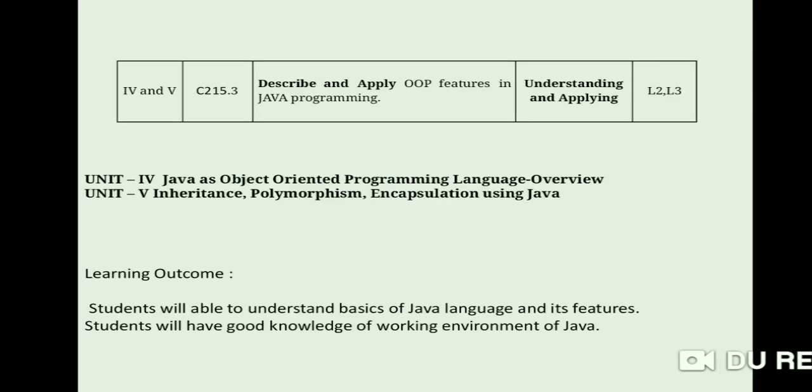Whenever we complete studying Units 4 and 5 - Java as OOP Language and Inheritance, Polymorphism, Encapsulation using Java - students will easily understand and apply these features of Java programming. These come under Bloom's Level L2 and L3, understanding and applying the features. Outcome of this video will be you will have good knowledge of working environment of Java and understand the basics of Java language and its features.